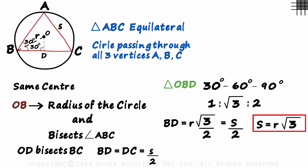This is like a super important relation. In a figure where a circle passes through the three vertices of an equilateral triangle, its sides will equal root 3 times the radius.